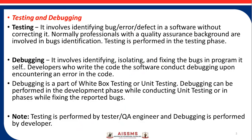Next is testing and debugging. Testing involves identifying bugs, errors, and defects in software without correcting it. Normally, professionals with a quality assurance background are involved in bug identification. Testing is performed in the testing phase.